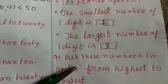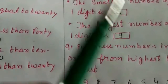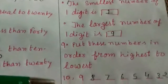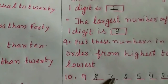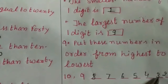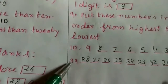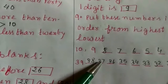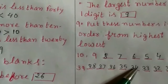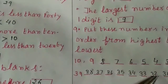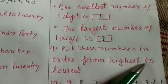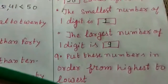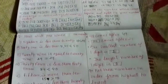Question number 9: put these numbers in order from highest to lowest — that means greatest to smallest, which is decreasing order. First set: 10, 9, 8, 7, 6, 5, 4, 3, 2, 1 — going in decreasing order. Second set: 39, 38, 37, 36, 35, 34, 33, 32, 31, 30. We go in decreasing order from the biggest number to the smallest. The first chapter is now complete — I hope everyone is clear with no doubts.